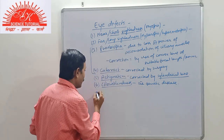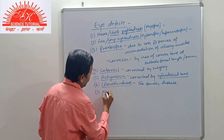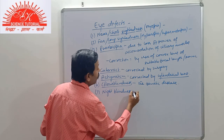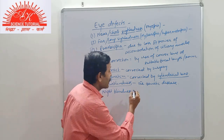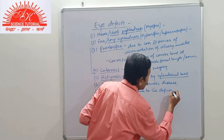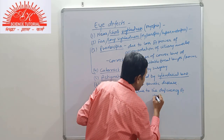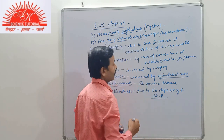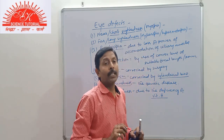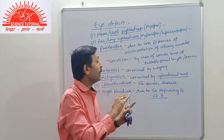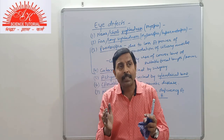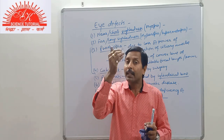The next eye defect is night blindness, also known as xerophthalmia. It is due to deficiency of vitamin A, that is retinol. Due to vitamin A deficiency, visual purple is not synthesized properly, so vision in dim light is affected. It is a nutritional deficiency disease and can be corrected by taking a vitamin A-rich diet.